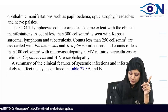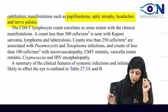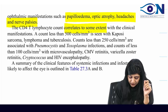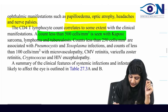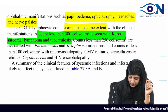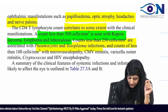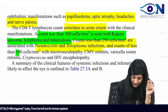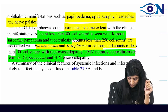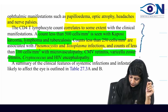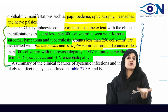In the posterior segment, ophthalmic manifestations include papilledema, optic atrophy, and cranial nerve palsies. CD4 count correlates with clinical manifestations: less than 500 — Kaposi sarcoma, lymphoma, tuberculosis; less than 250 — pneumocystis and toxoplasma infection; less than 100 — microvasculopathy, CMV retinitis, varicella zoster retinitis, cryptococcus, and HIV retinopathy. A summary table has been provided — mark this table.